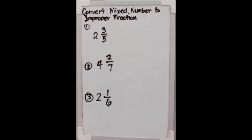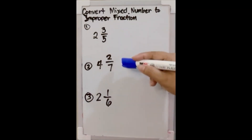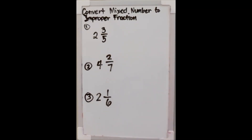Now let's discuss converting mixed numbers to improper fractions. We have three mixed numbers here, and we'll be converting them into improper fractions. A while back we converted an improper fraction to a mixed number — this time it's the reverse.